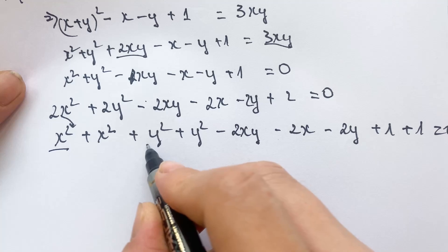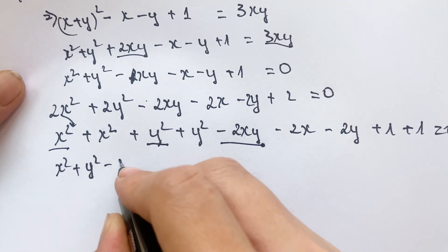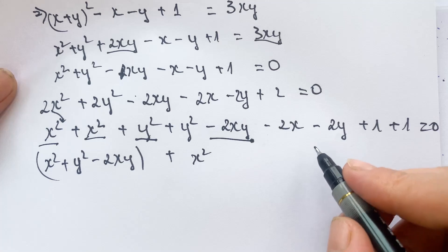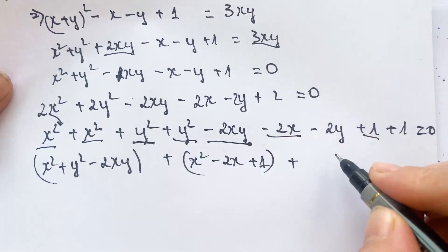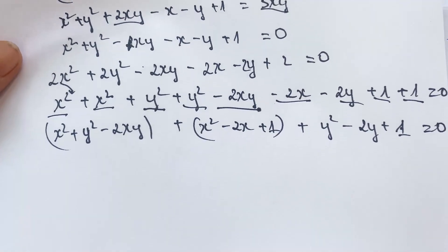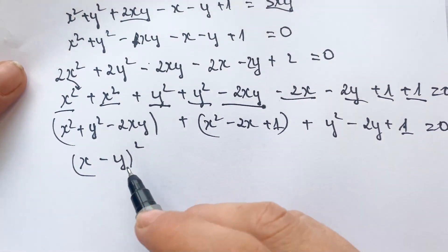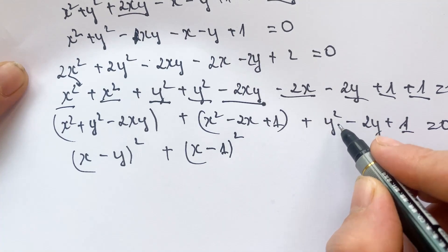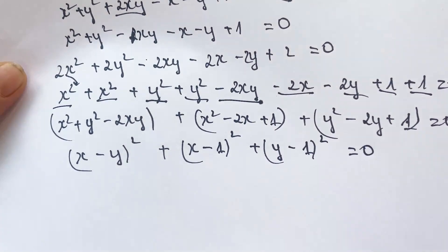You can take x squared and y squared minus 2xy squared as a group, and plus x squared minus 2y plus 1. And so, y squared minus 2y plus 1 equals 0. For that, you can say (x minus y) to the half power squared is the identity, plus (x minus 1) to the half power squared, plus (y minus 1) to the half power squared equals 0.